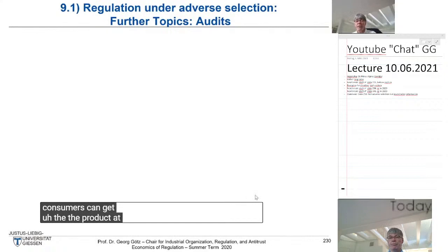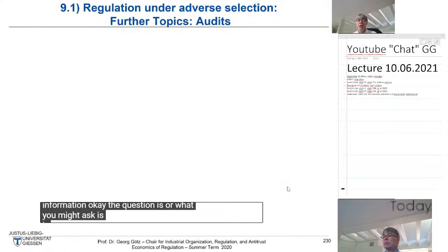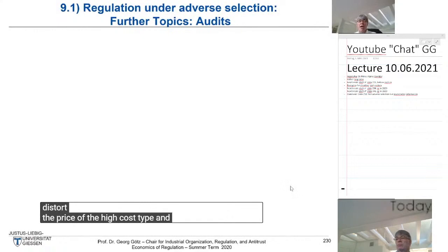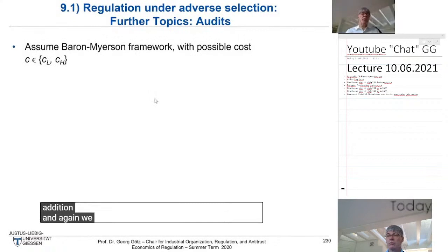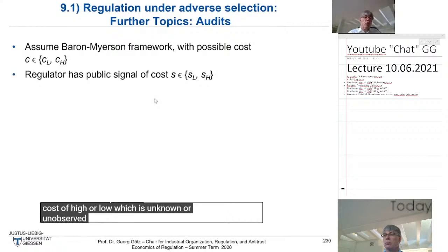We saw that it's always optimal to pay such an information rent because social welfare is higher — those small triangles from increasing consumer surplus. If we make the low-type firm reveal its true type, consumers can get the product at a low price, even though they have to pay some information rent. So the question is: is there anything else the regulator could do to avoid paying a socially costly rent and distorting the high-cost type's price?